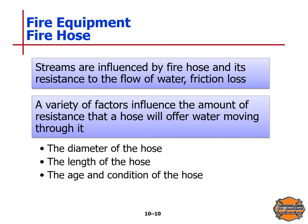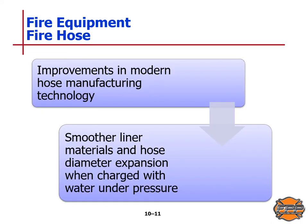Fire streams are influenced by fire hose and its resistance to the flow of water due to friction loss. Factors that influence the amount of resistance include the diameter of the hose, the length of the hose, and the age and condition of the hose. Improvements in modern hose manufacturing technology have produced smoother liner materials and hose diameter expansion when charged under pressure, resulting in much less friction loss inside the hose.